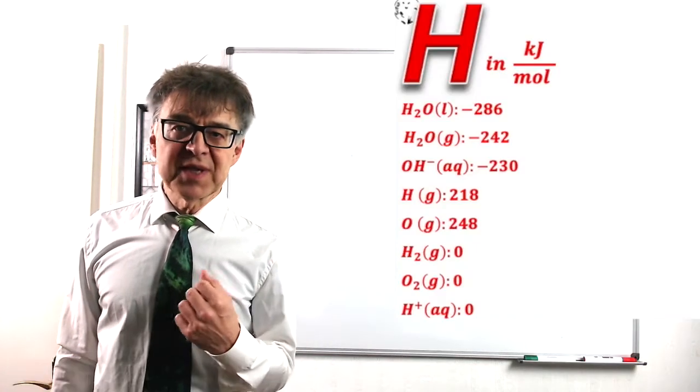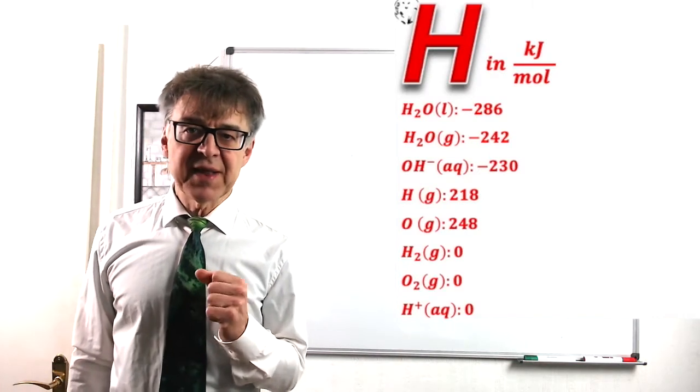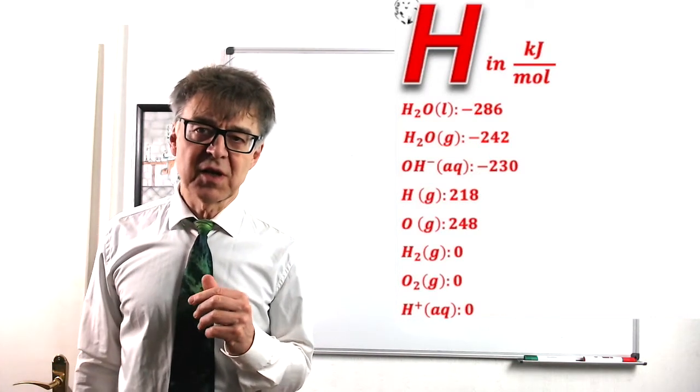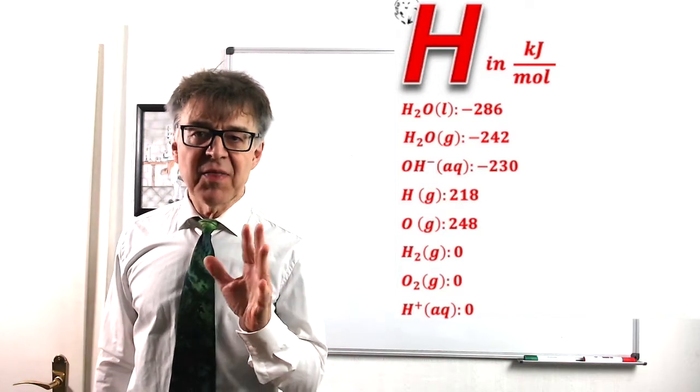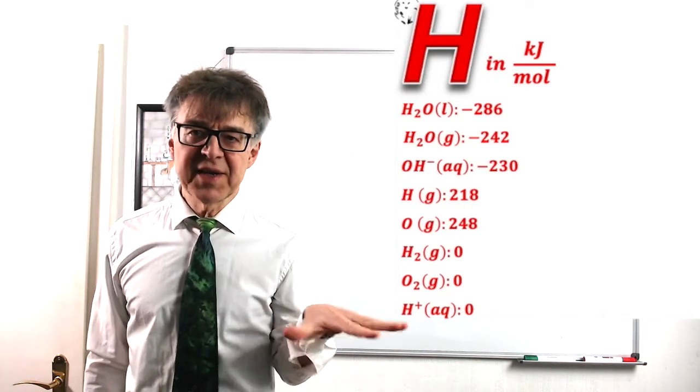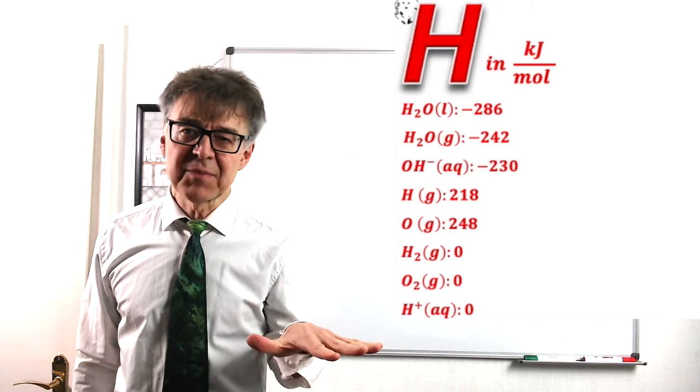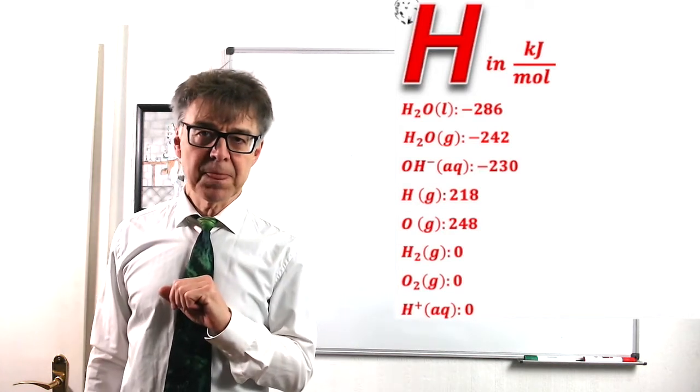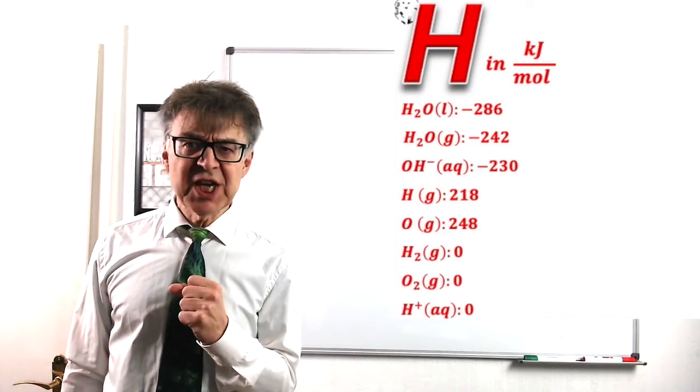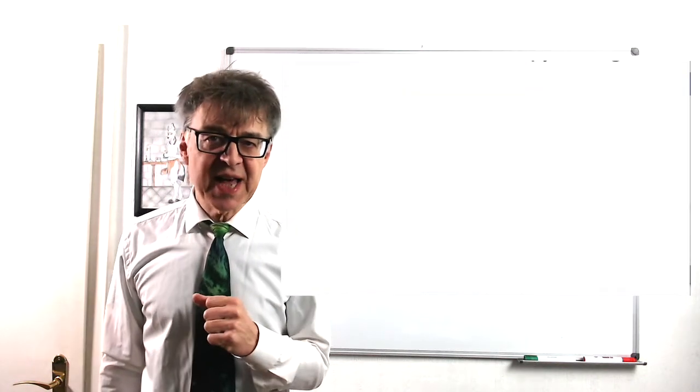If you look up enthalpies in thermodynamic tables, we will find negative values for most of the chemical compounds. That means these compounds are lower in energy, or rather in enthalpy, than the elements.